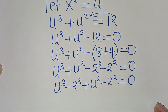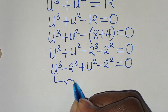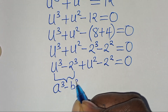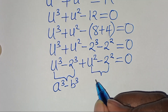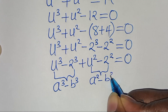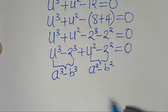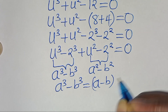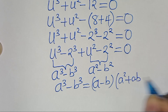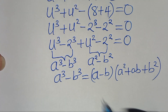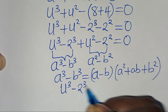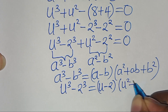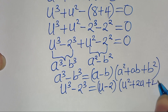We have two parts here. The first part is the difference of two cubes expressed as a to the power of 3 minus b to the power of 3. The second part is the difference of two perfect squares expressed as a squared minus b squared. From the first part, a to the power of 3 minus b to the power of 3 can be expressed as a minus b, times a squared plus ab plus b squared. This implies that u to the power of 3 minus 2 to the power of 3 is the same as u minus 2, times u squared plus 2u plus 4. Let's call this equation 1.